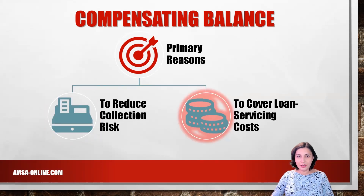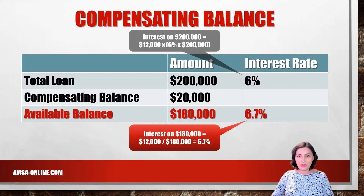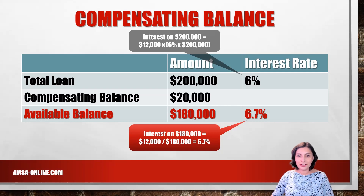Secondly, to cover loan servicing costs. The bank is effectively charging you more than 6 percent, as you are paying $12,000 — which is $200,000 multiplied by 6 percent — for a loan of $180,000. The effective interest rate is 6.7 percent: $12,000 divided by $180,000.